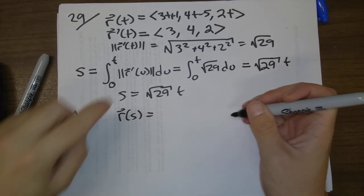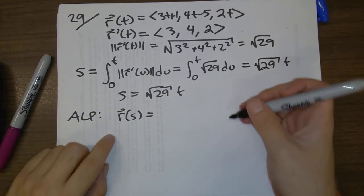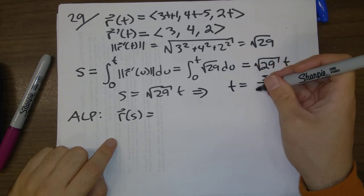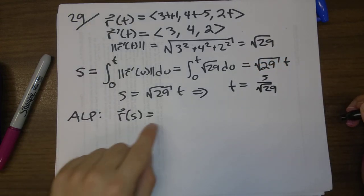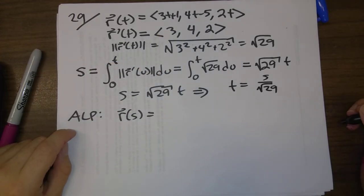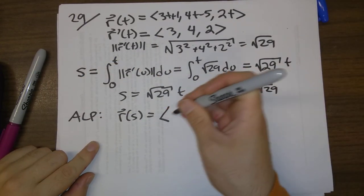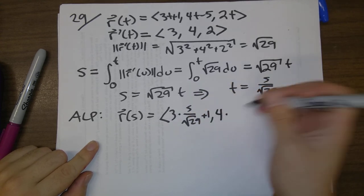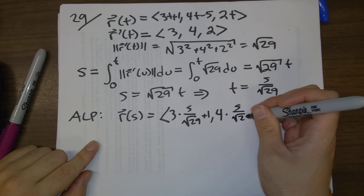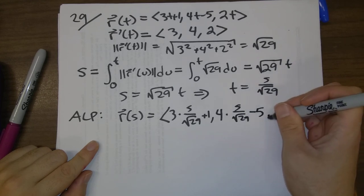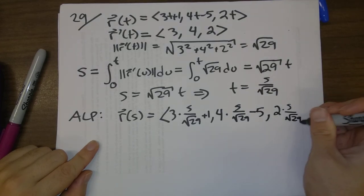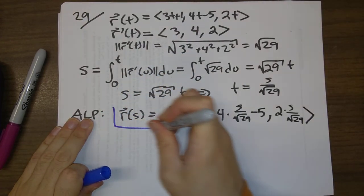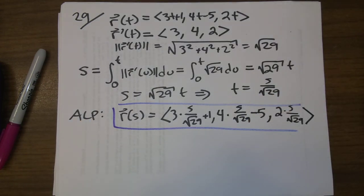For r of s, everywhere we see a t, we replace it. We solve for t: t equals s divided by square root 29. So r of s is (3 times s over square root 29 plus 1, 4 times s divided by square root 29 minus 5, 2 times s divided by square root 29). That is our arc-length parametrization.